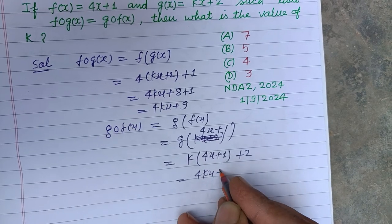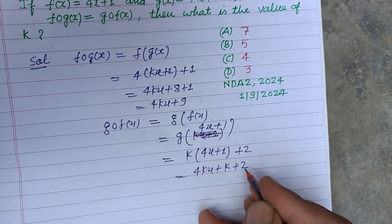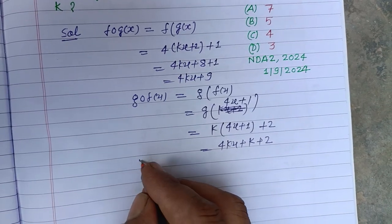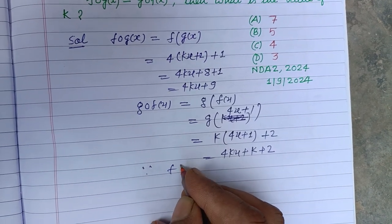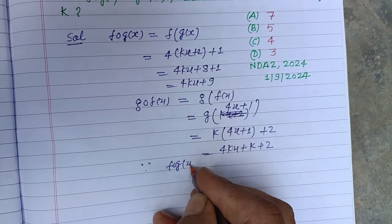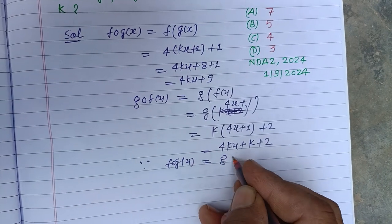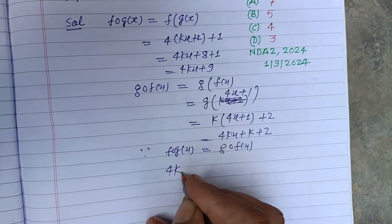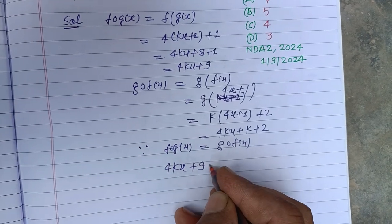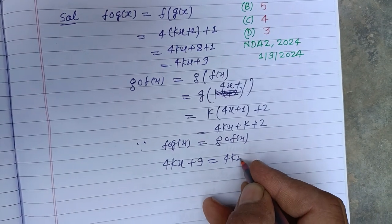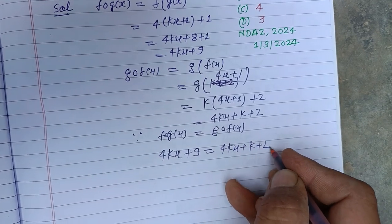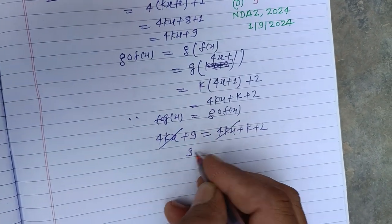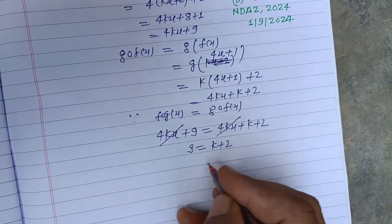So 4kx plus 9 equals 4kx plus k plus 2. The 4kx terms cancel on both sides, leaving 9 equals k plus 2.